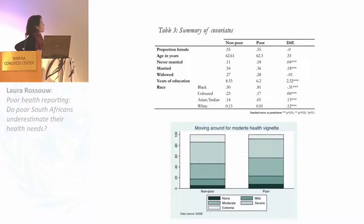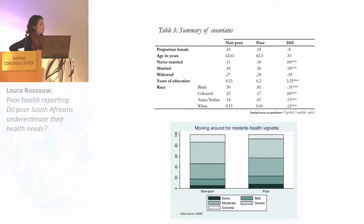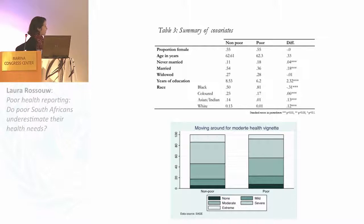The covariates included in the analysis differentiate between the poor and non-poor. The sample is about 55% female with a mean age of 62. Persons in the non-poor group are more likely to be married and have more years of education. The poor grouping is almost 80% African black, while the Asian, Indian, and white population groups fall almost completely in the non-poor.